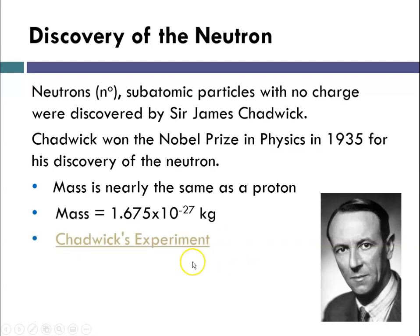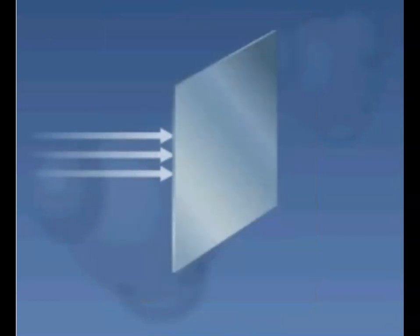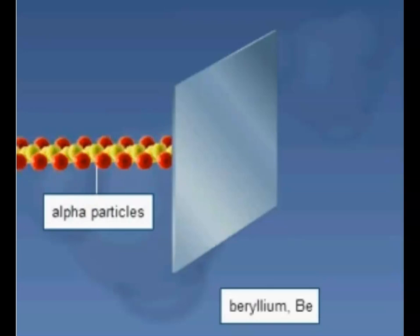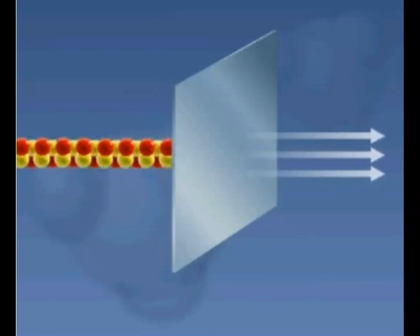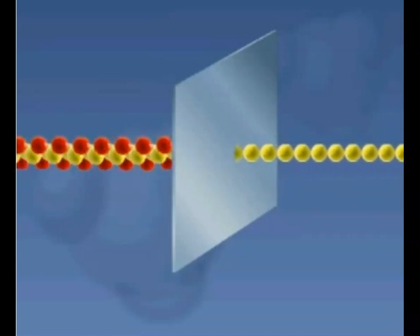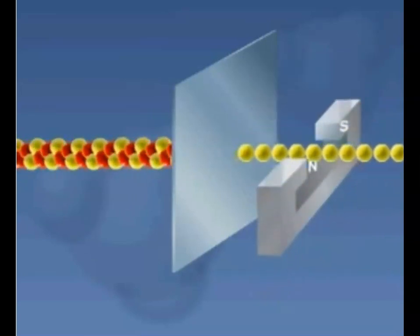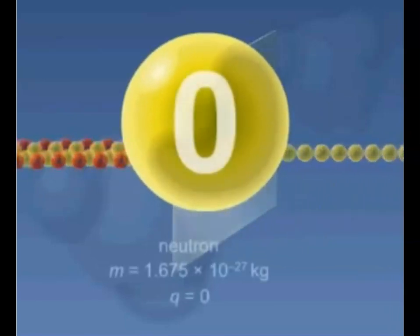Neutrons were discovered in 1932 by the English physicist James Chadwick. Chadwick bombarded a thin foil made of beryllium with a stream of alpha particles emitted by a radioactive isotope of polonium. He observed that high-energy radiation consisting of massive particles was emitted from the foil. The particles were deflected neither in an electric nor in a magnetic field, so they bore no electrical charge. The newly discovered particle was named the neutron.